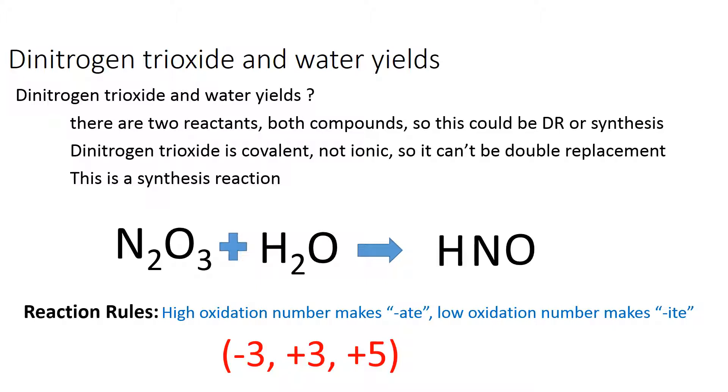We're looking at the positive oxidation numbers this time. The oxygen always has a negative 2, and there are 3 of them, which means the total negative oxidation numbers is minus 6.